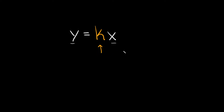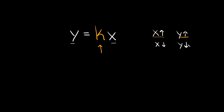This is known as direct variation because if x goes up, y goes up proportionally. If x goes down, y also goes down proportionally. So for example, if x doubled, y would double. If x tripled, y would also triple. Or in the other case, if x got cut in half, y would also get cut in half.